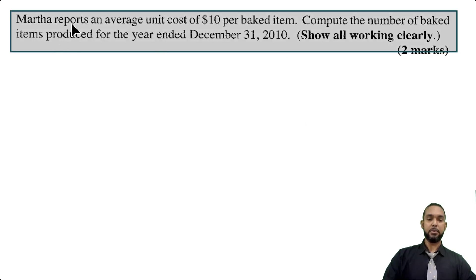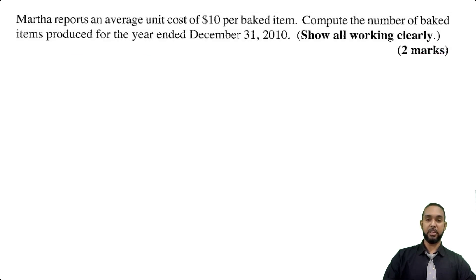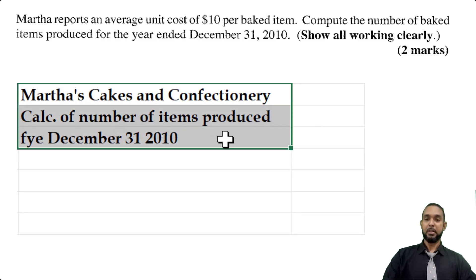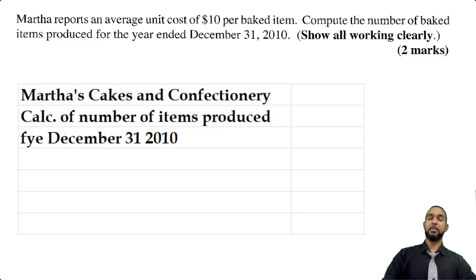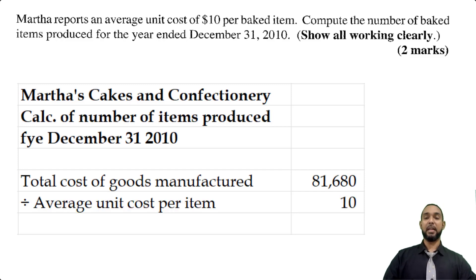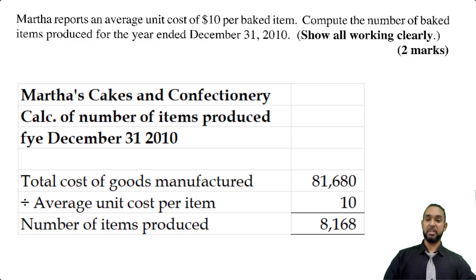Part C states that Martha reports an average unit cost of $10 per baked item — meaning the cost per unit is $10. We need to compute the number of baked items produced for the year ended December 31st, 2010. We take the total cost of all items produced — $81,680 — and divide by the cost per unit of $10, giving us 8,168 items produced.